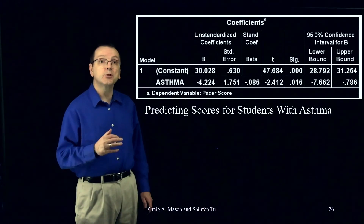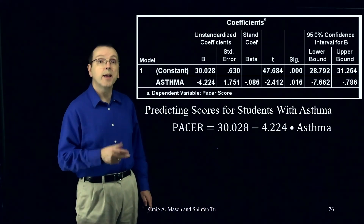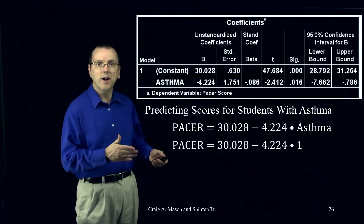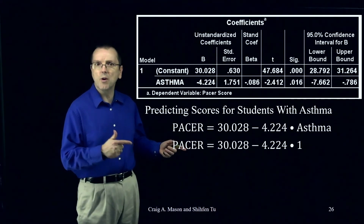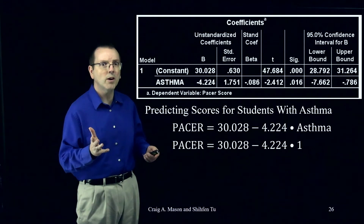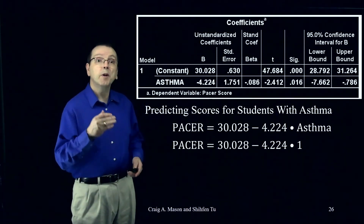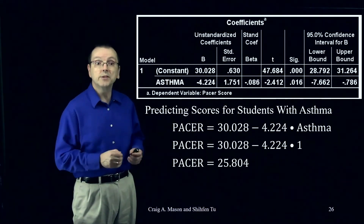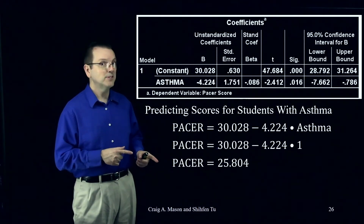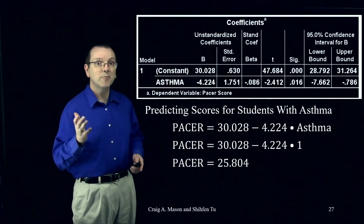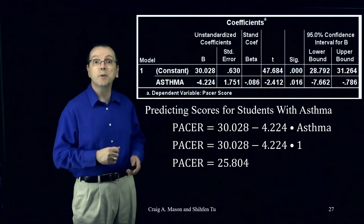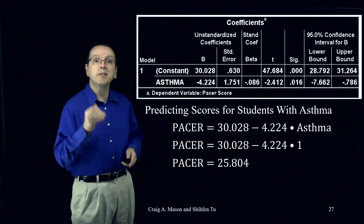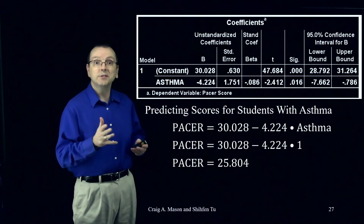The predicted PACER score for students with asthma is 30.028 minus 4.224 times their asthma score, which is equal to one. Negative 4.224 times one is negative 4.224. So we subtract 4.224 from 30.028 and get a predicted PACER score of 25.804 for students with asthma. And 25.804 was the mean for students with asthma — we saw that back in the t-test analysis. So the regression equation accurately predicts the mean for students with asthma.